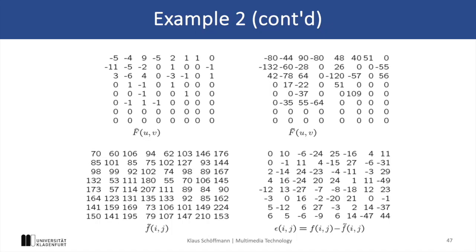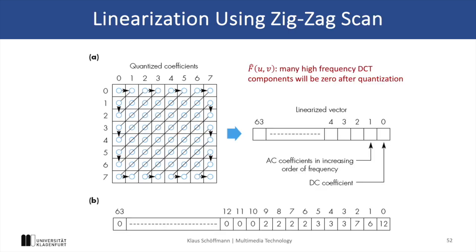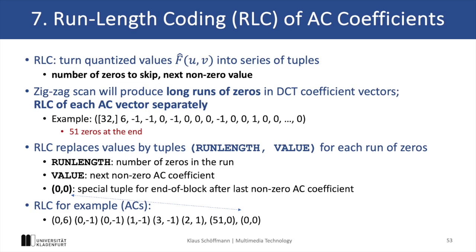Since natural images typically contain large homogeneous areas, it is very probable that the lower-right coefficients are zero. This is the reason why before entropy coding the JPEG algorithm employs a zigzag scan of coefficients, which often results in long runs of zeros at the end. The entropy coding can effectively utilize these long runs of zeros by using a run-length coding scheme for AC coefficients, which uses tuples containing the number of zeros in the run and the next non-zero AC coefficient. So for example, the AC sequence 6, -1, -1, 0, -1, 0, -1, 0, 0, 0, ... would be represented by the tuples (0,6), (0,-1), (0,-1), (1,-1), (3,-1), and so on.